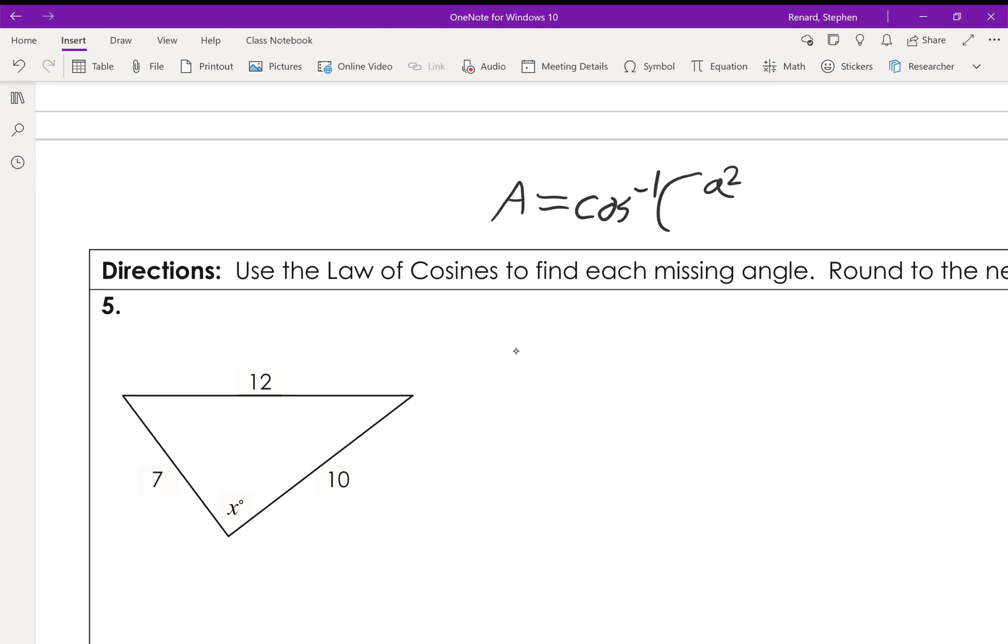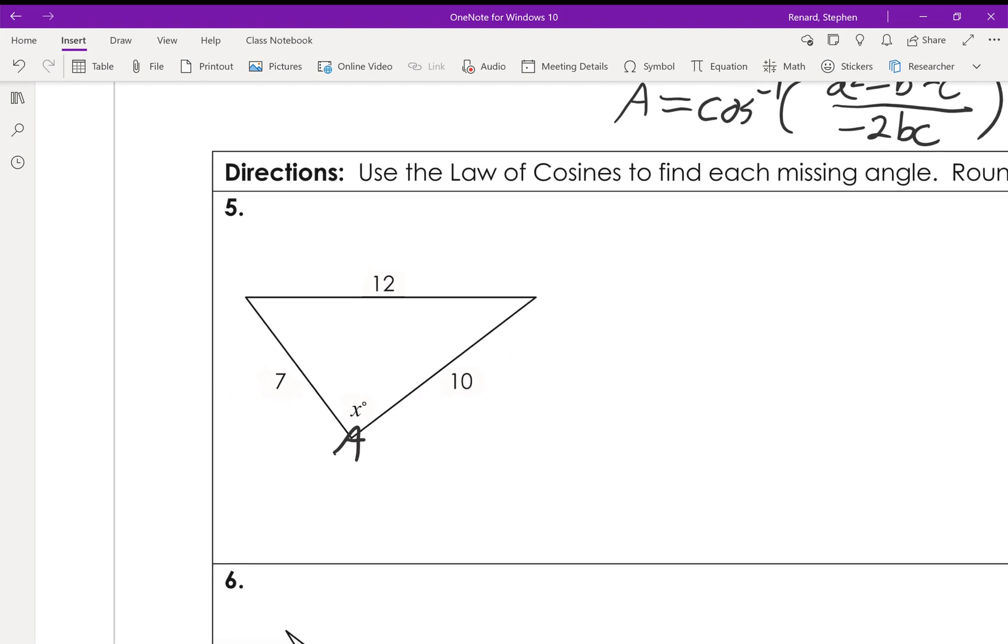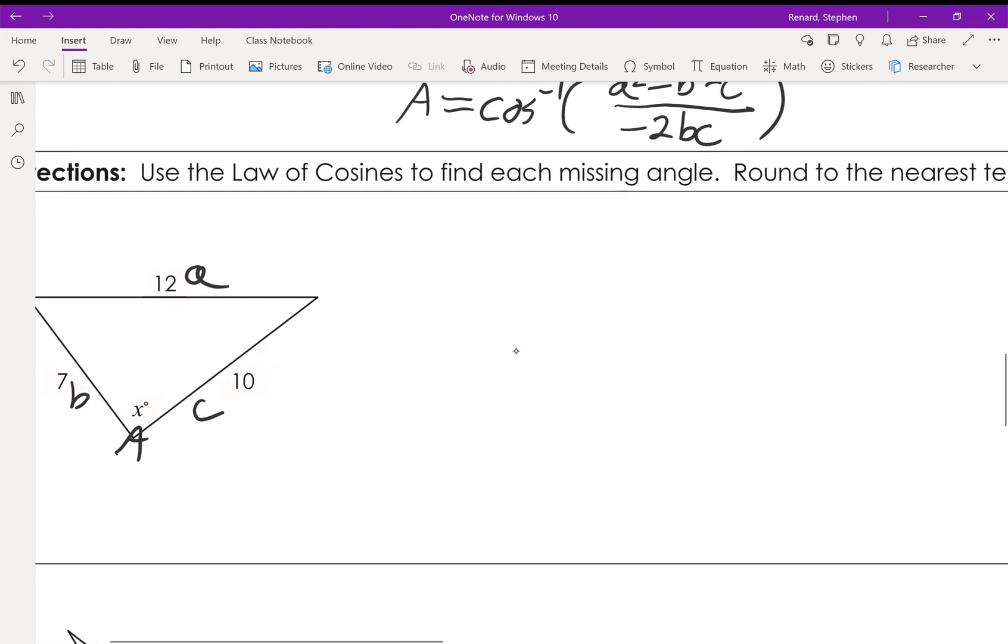Of a squared minus b squared minus c squared over negative 2bc. And class I went over where that comes from, so if you have the notes you should have that in them. So here again, I think the most common thing is to mark that as A, but it really doesn't matter as long as these two right here matched up, A and A, B and B, C and C. The rest of it is fairly irrelevant.